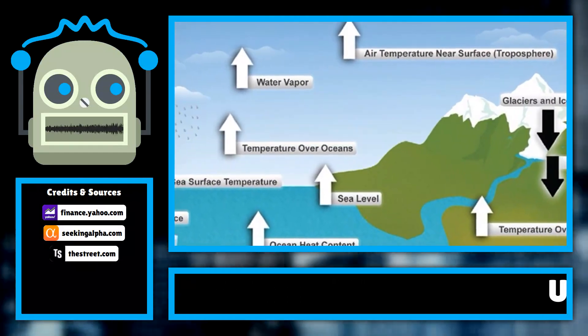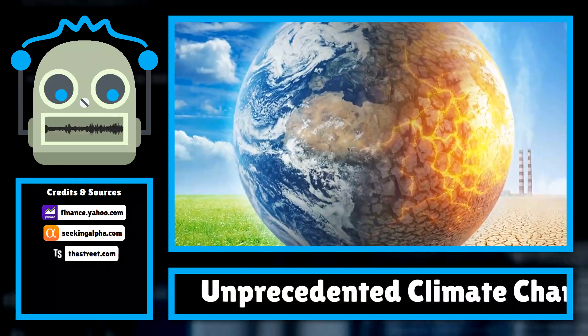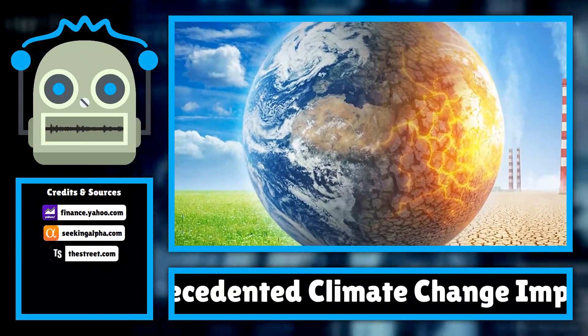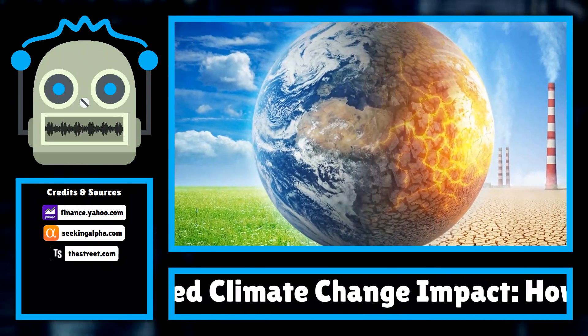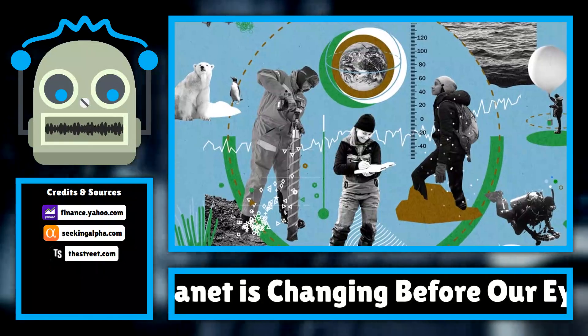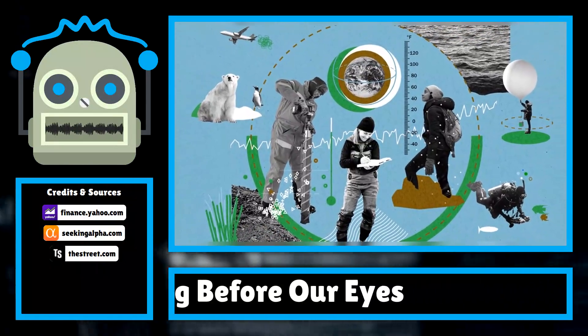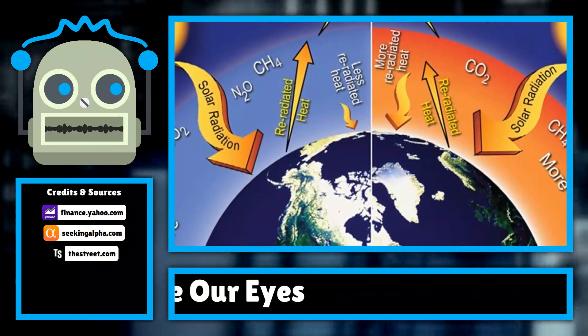In response to these alarming trends, governments around the world are being urged to take immediate action to reduce greenhouse gas emissions. The recent COP28 summit brought together leaders from various nations to discuss strategies for mitigating climate change and transitioning to renewable energy sources. However, critics argue that progress has been slow and the commitments made by many countries fall short of what is needed to avert a climate catastrophe.